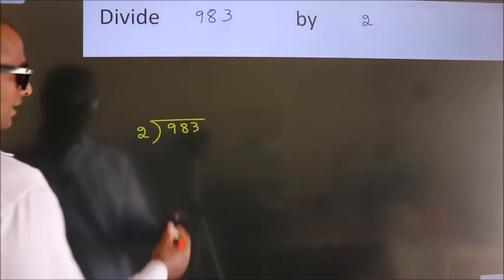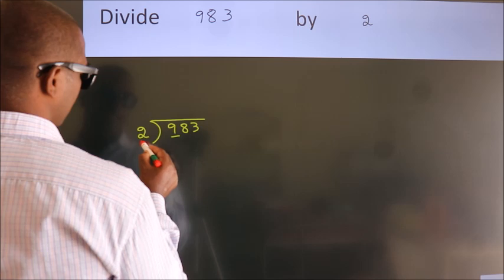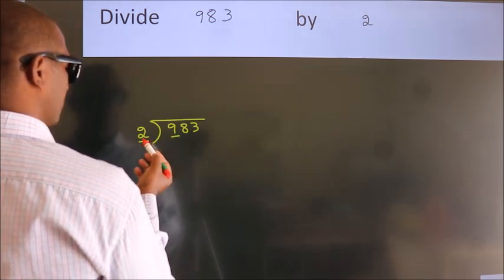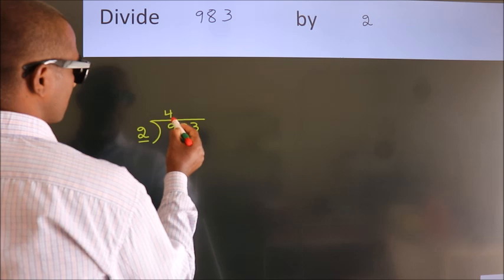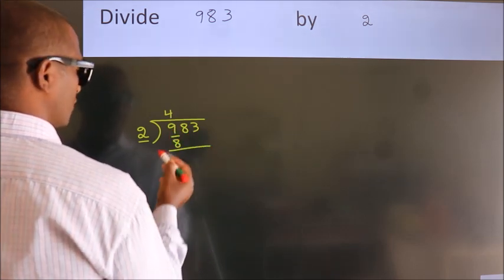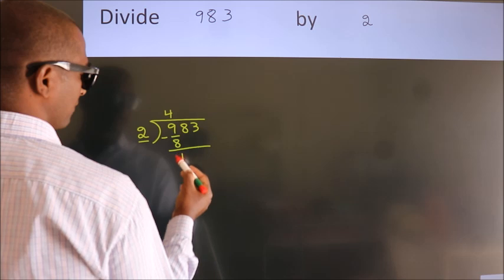Next, here we have 9, here 2. A number close to 9 in the 2 table is 2 fours 8. Now we should subtract. We get 1.